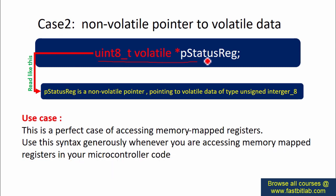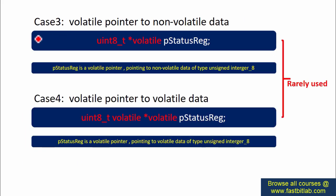The use case for a non-volatile pointer to volatile data is accessing memory-mapped registers — use this syntax generously whenever accessing memory-mapped registers. It tells the compiler that the data pointed to by this pointer is volatile in nature and may change unexpectedly, so don't optimize any data read or write operations using this pointer. Case three is a volatile pointer to non-volatile data, and case four is a volatile pointer to volatile data — these are rarely used.